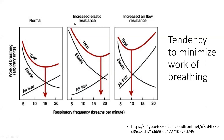Our body physiologically tends to minimize the work of breathing. When elastic resistance increases — as in fibrosis — the intersection point shifts to a higher respiratory frequency, so the person breathes at a higher rate with shallow breaths to minimize work. On the other hand, when airflow resistance increases, the intersection shifts to the left — toward a lower respiratory frequency — so the person takes fewer, deeper breaths to minimize the work of breathing.